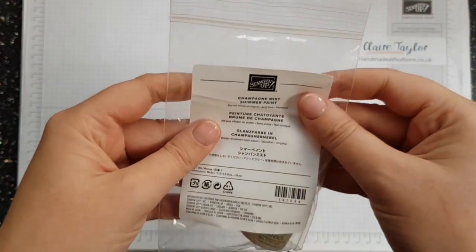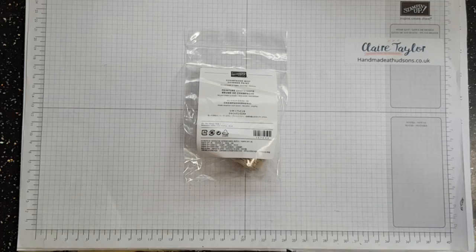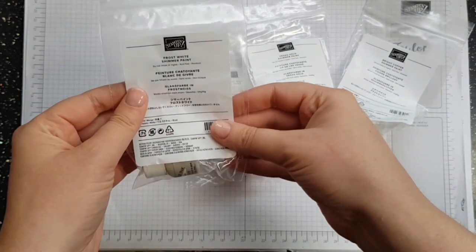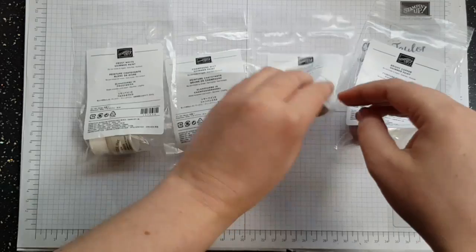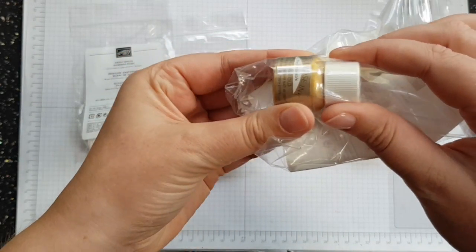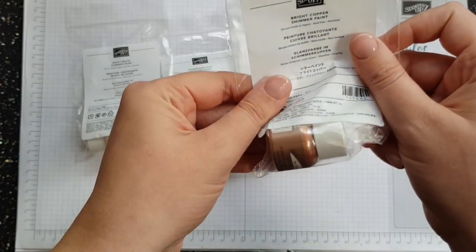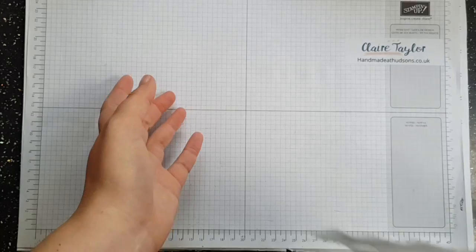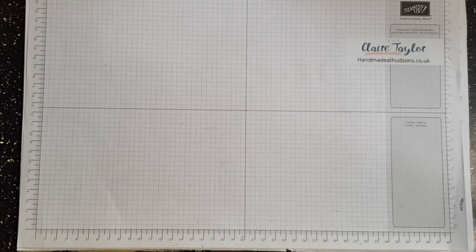And then we have got some champagne mist shimmer paint. Now I do have a confession to make and that is I got them in all the colours. I'm not really sure how to use them yet but I'll have to learn and then show everyone else. So I've got frost white shimmer paint, champagne mist shimmer paint, Vegas gold shimmer paint that looks quite pretty, and then we've got a bright copper shimmer paint. Yes I will be playing with these and showing you what I have created and perhaps a tutorial.